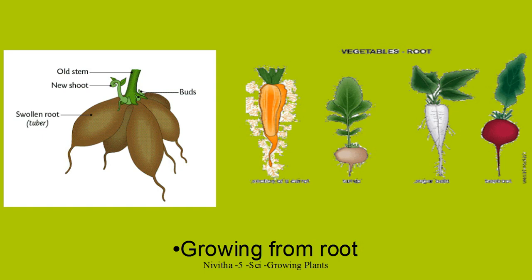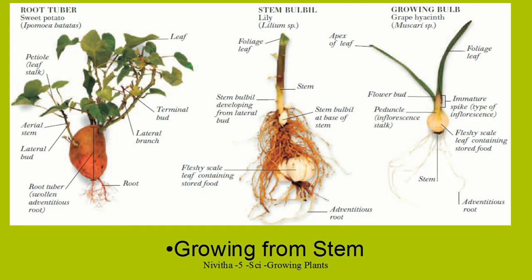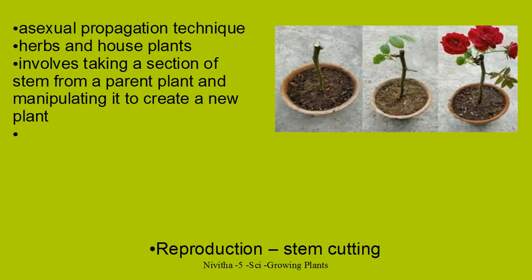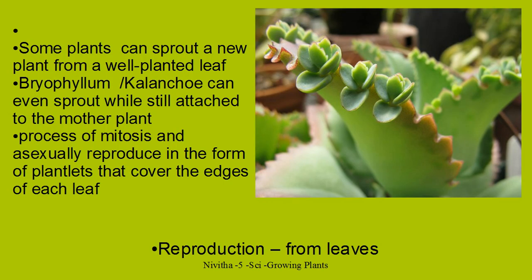Growing from a root. We have seen growing from a stem and we have seen rhizomes. This is a swollen root of a tuber. This is a pore or a bud from where a new shoot comes out — old stem and a new shoot. Likewise, a new shoot can be seen coming from a banana plant also. Growing from a root.